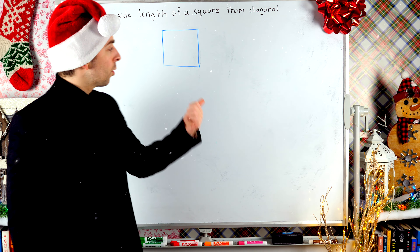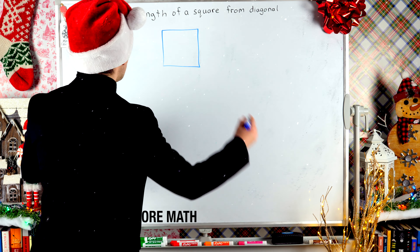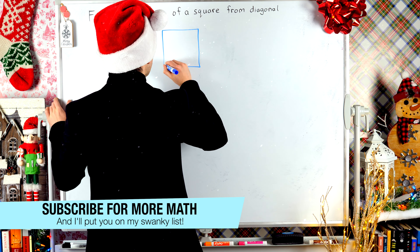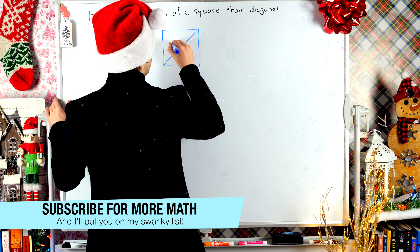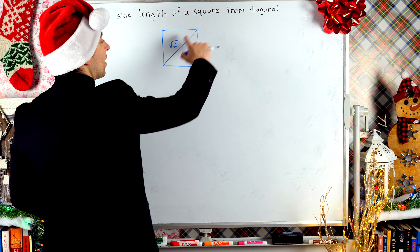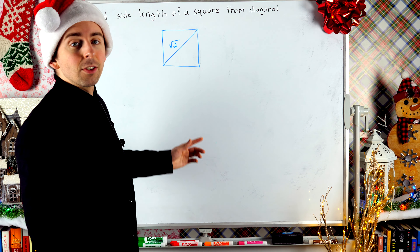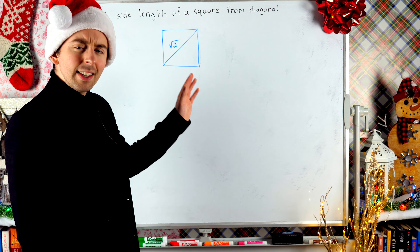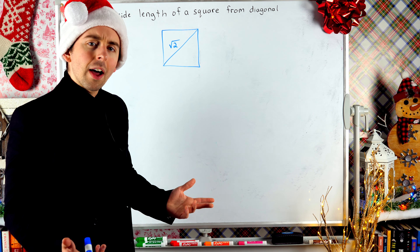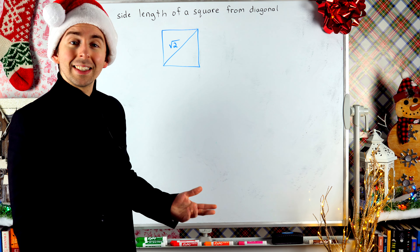Season's greetings. Here we've got a square. Suppose we know that the diagonal of this square has length square root of 2. By the way, the diagonals of a square are congruent. So if this diagonal has length square root of 2, then the other diagonal does as well. With this information, how can we find the side length of the square? That's what we'll go through in today's lesson.